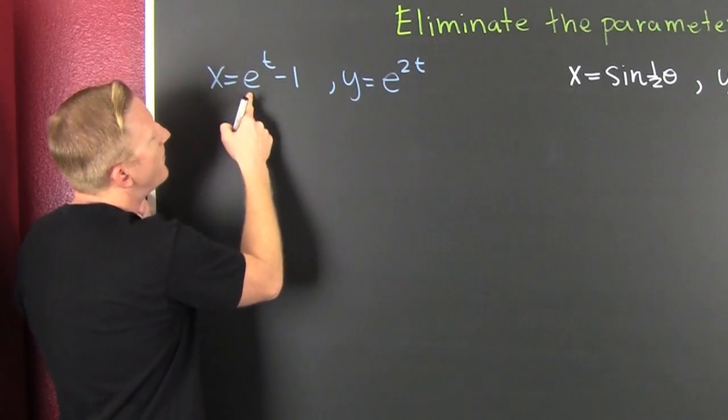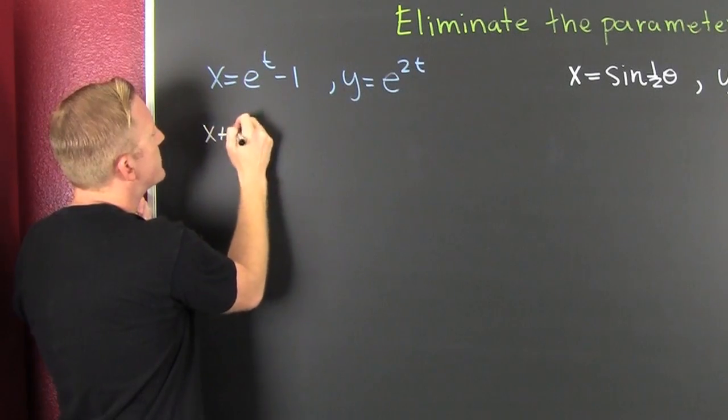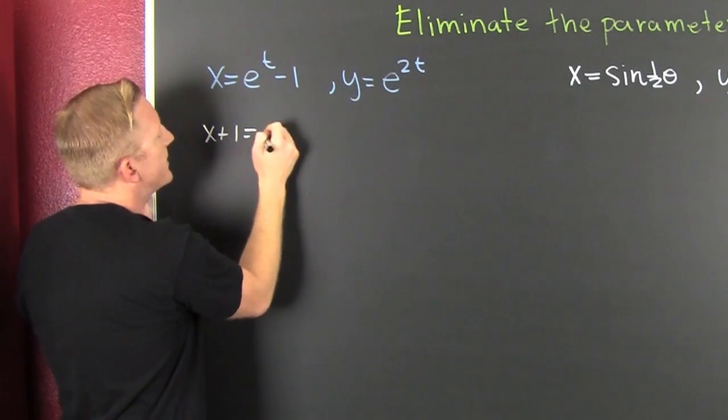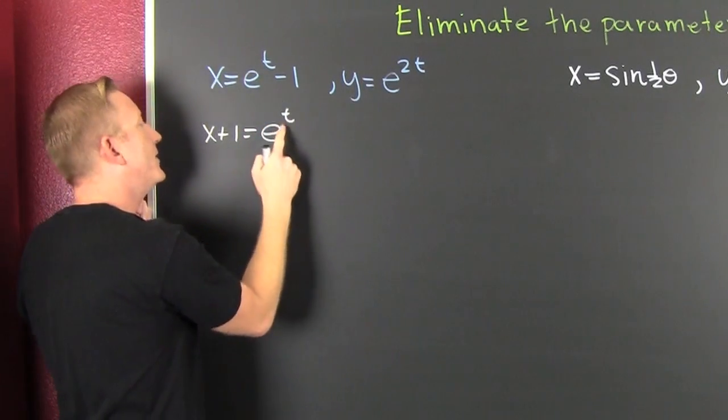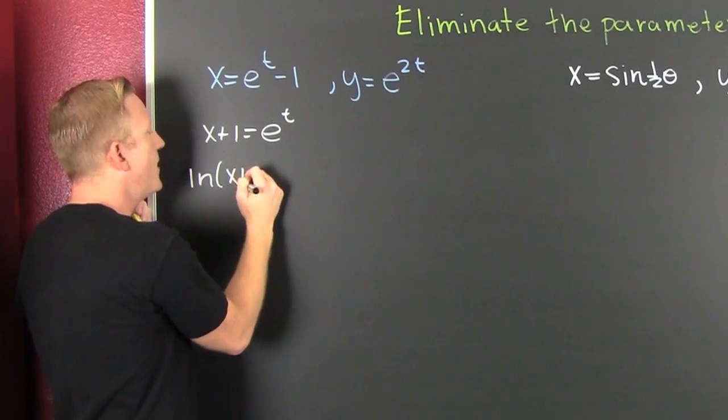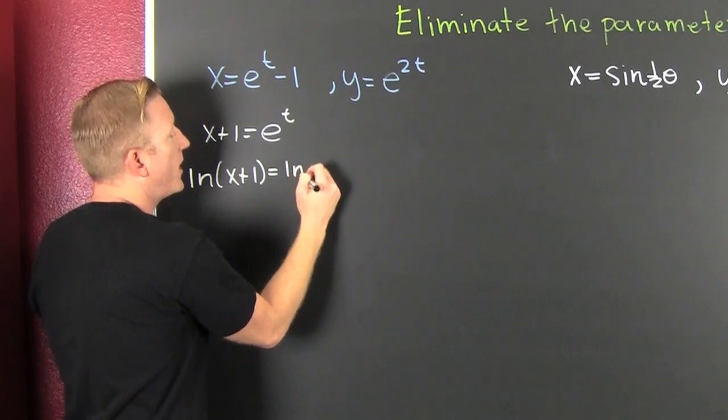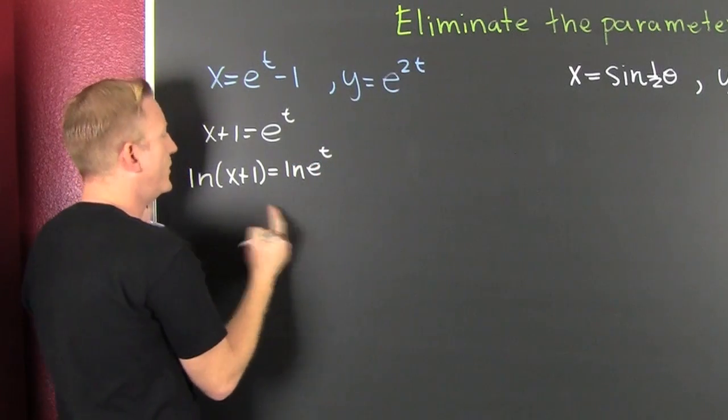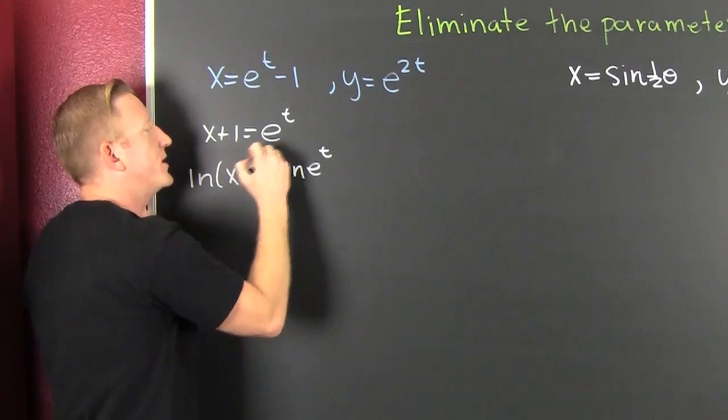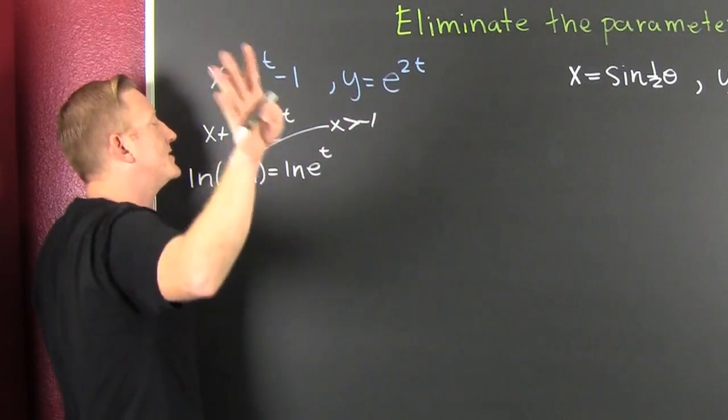Usually when you're eliminating this parameter, you're going to solve one of the equations for t and then you're going to substitute it into the other. This is the usual first strategy you should try unless you see trig functions, but we'll get to that in a moment. Right now I'm going to solve this guy for t. So then this is x plus one, that's going to be e to the t.